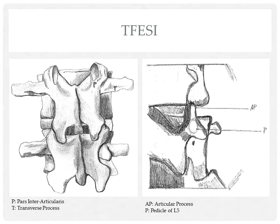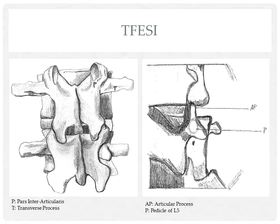We will now describe the technical approach to the transforaminal epidural injection. In this case, medication is delivered into the anterior epidural space via the neuroforamen. The approach typically enters the epidural space via the superior one-third of the neuroforamen, described as the safe triangle.